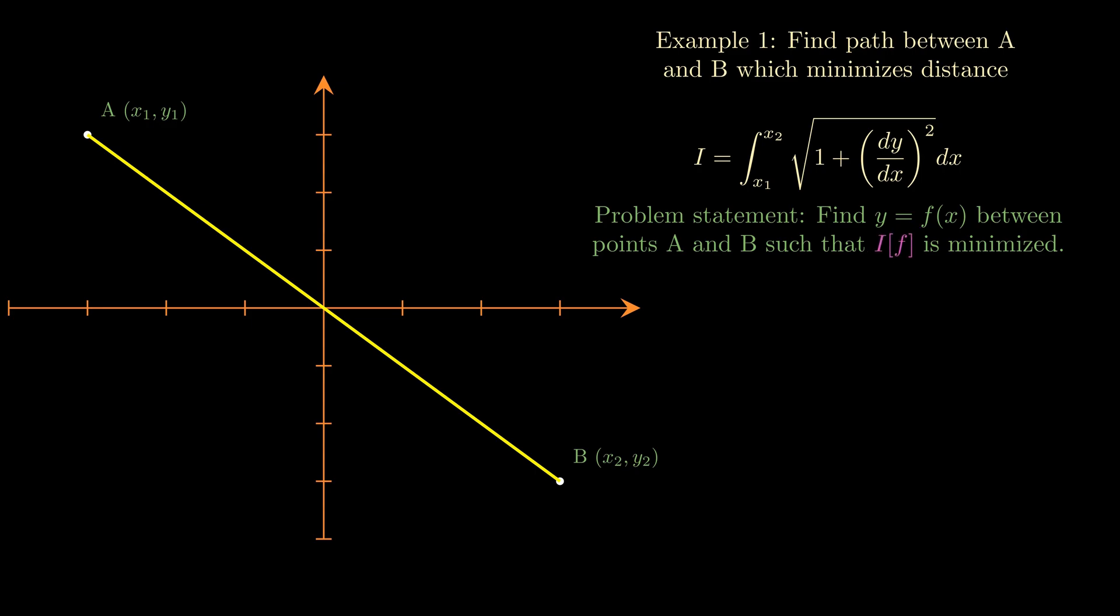Our integral I is basically a functional in this case because it depends on what function you plug in and because the output that returns after plugging in a function is a real number, the distance to be specific. So in attempting to find the path of shortest distance between A and B, it turns out that we need to use calculus of variations to find the function f(x) that minimizes our functional I.